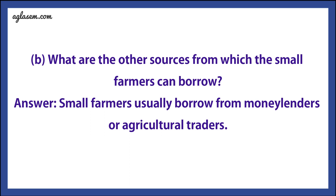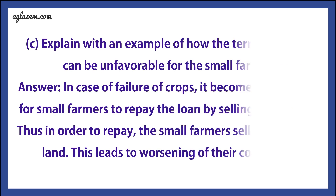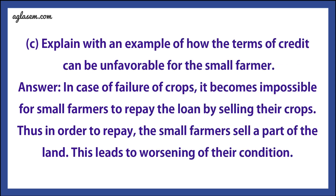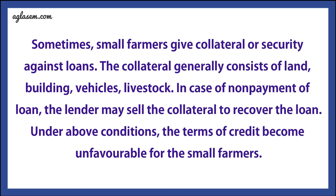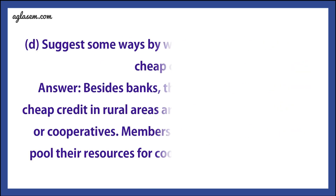Part C: Explain with an example how the terms of credit can be unfavorable for small farmers. Answer: In case of crop failure, it becomes impossible for small farmers to repay the loan by selling their crops. To repay, small farmers may have to sell part of their land, worsening their conditions. Sometimes small farmers give security against loans, and in case of non-payment the lender may sell the security to recover the loan. Under these conditions, the terms of credit become unfavorable for the small farmer.